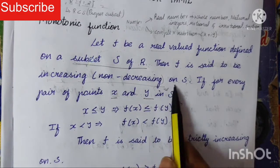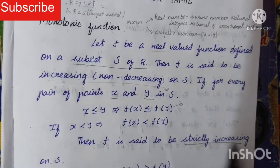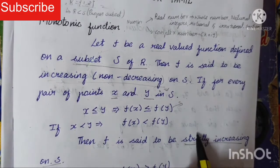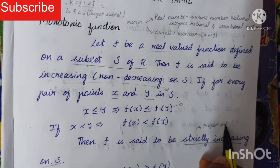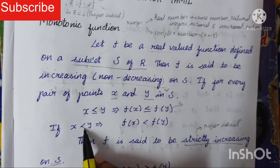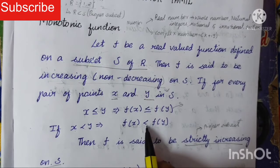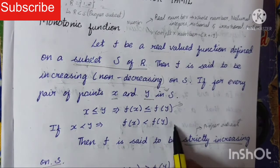Now we see strictly increasing on S. Strictly denotes proper subset, so x less than y implies f(x) less than f(y). This is known as strictly increasing on S.